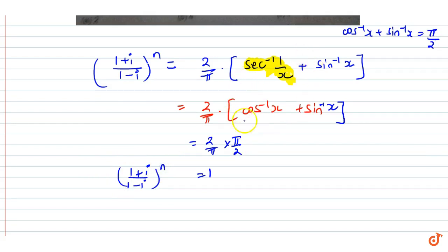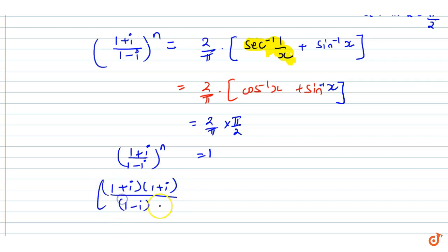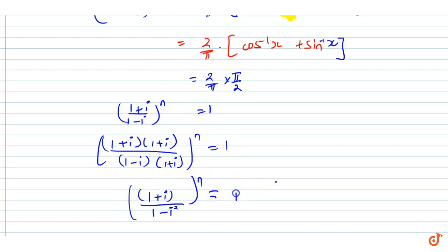Now the equation becomes (1 + iota)/(1 - iota) whole power n = 1. We will rationalize this by multiplying numerator and denominator by (1 + iota): (1 + iota)² / (1 - iota)(1 + iota), whole power n = 1.